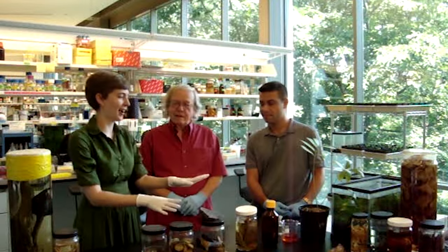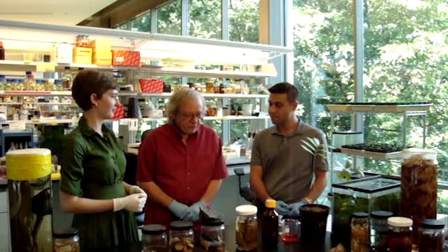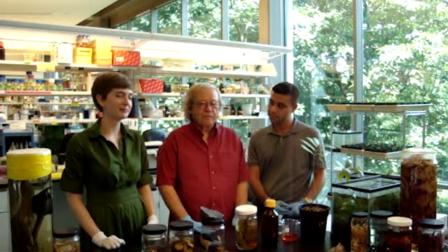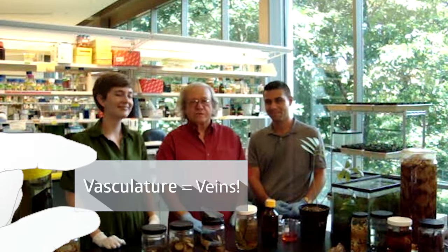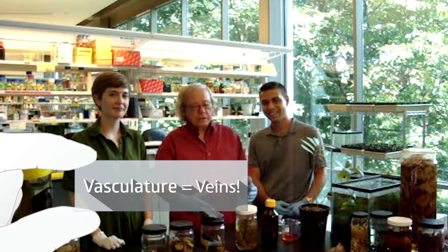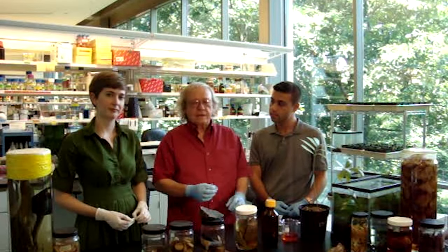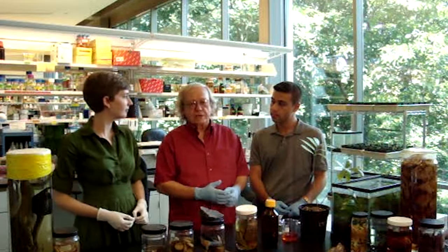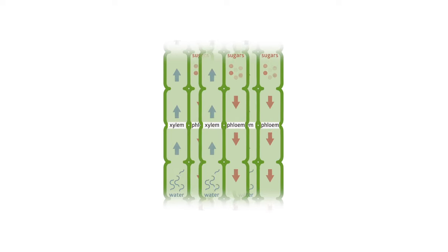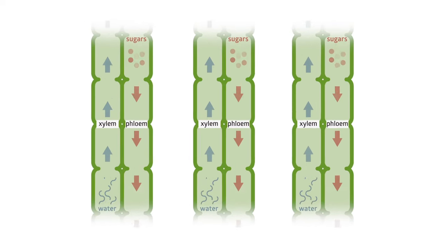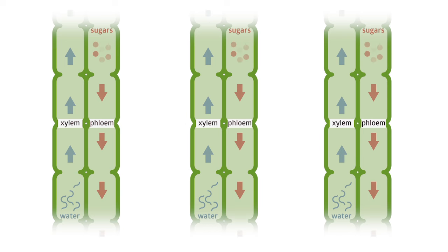Today we're going to look at something called vasculature — that's just a technical term for talking about veins that most of us see in leaves. What we usually don't know is that the veins are actually continuous into the stems of the plants. The veins are important because they contain two cell types: there's one called xylem, which conducts water — it's just like plumbing — and next to that are cells called the phloem, whose role is to conduct the photosynthate that the plant makes to feed the roots.